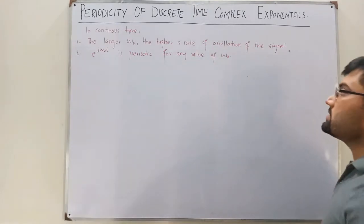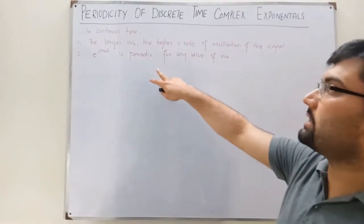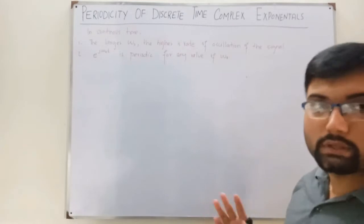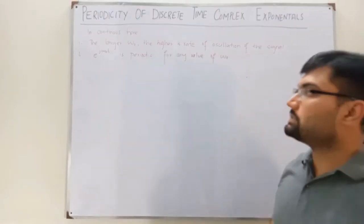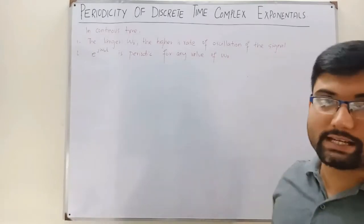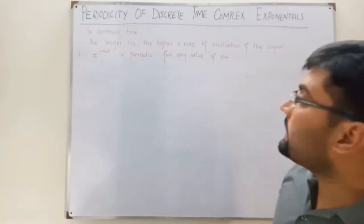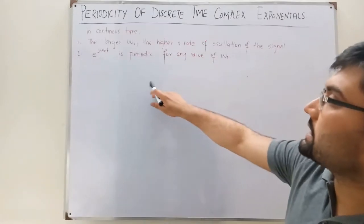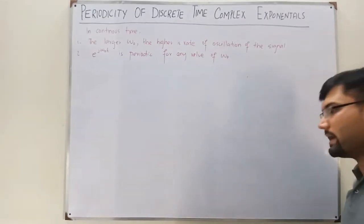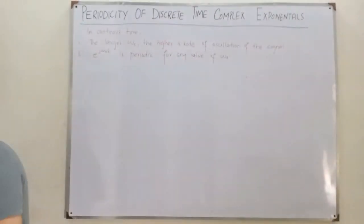Now in the continuous time, we know about these two properties. The first is that the larger the value of omega naught, the higher is the rate of oscillation of the signal. As you increase omega naught, frequency will increase — the number of cycles per second. And this complex exponential, e^(j*omega_0*t), is periodic for any value of omega naught.